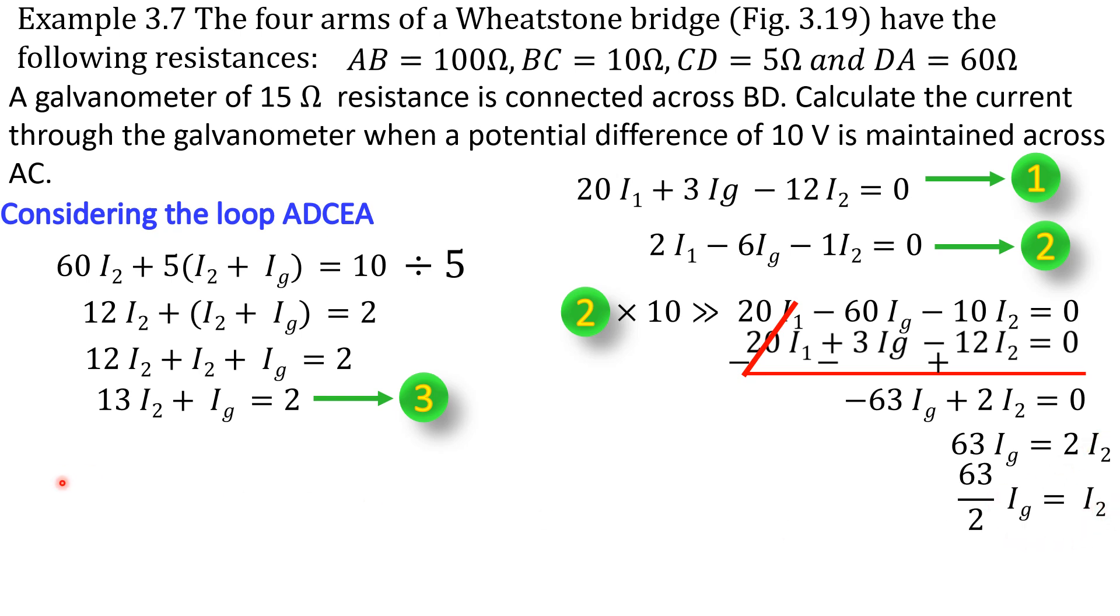So, substituting this I2 value in third equation, we get this one. That is, 13 into 63 by 2 into IG plus IG is equal to 2. By taking LCM, we get this one. That is, 13 into 63 IG plus 2 IG by 2 is equal to 2.